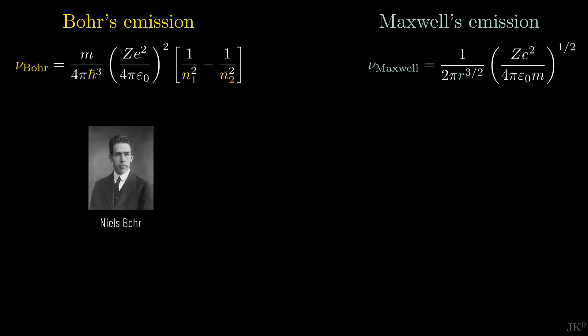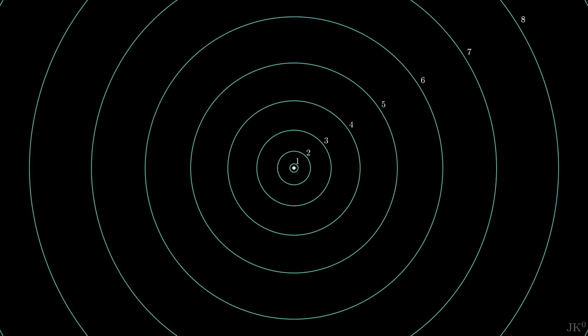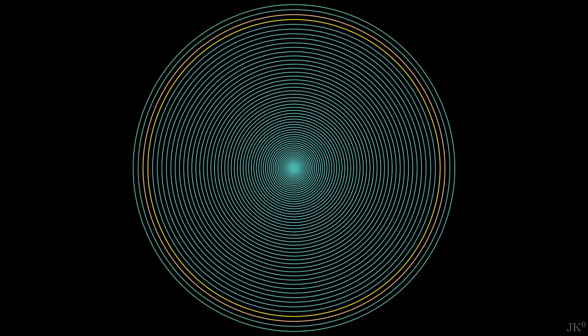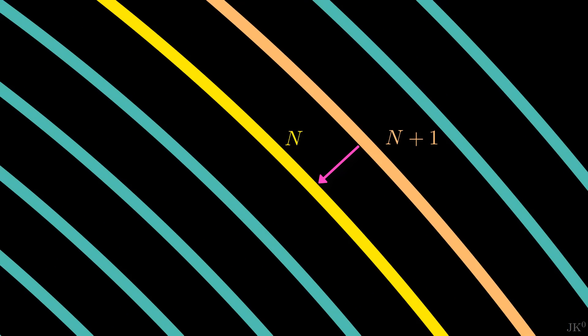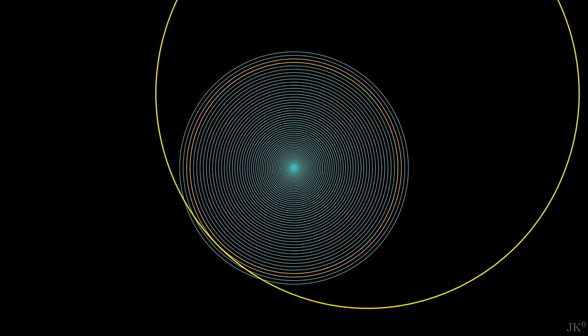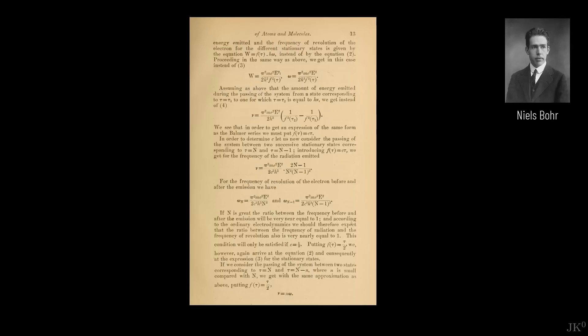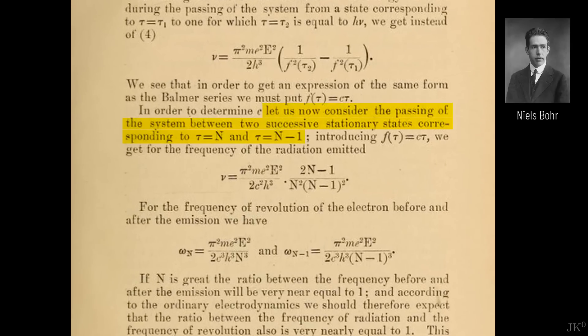Bohr realized that to correctly obtain the classical result, he should consider an atomic transition between consecutive levels of very large radius. If these are the atomic energy levels, Bohr suggests to go very far from the nucleus so that the radiation is emitted when the electron jumps from the level n plus 1 down to the level n, where n is a large number. It is the frequency of this emitted radiation that Bohr compares with the classical case. In his paper, Bohr put it slightly differently: let's now consider the passing of the system between two successive stationary states corresponding to n and n minus 1. But the result is exactly the same.